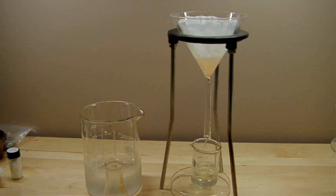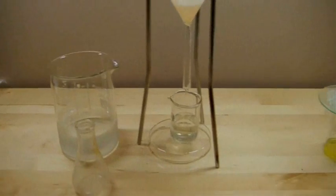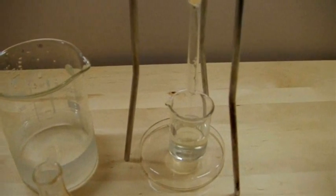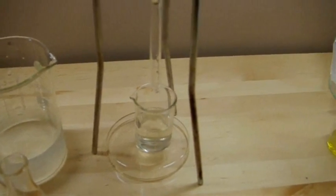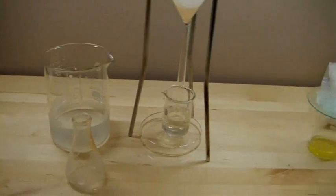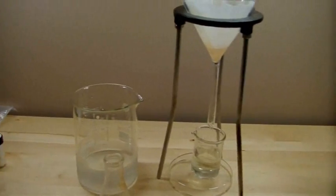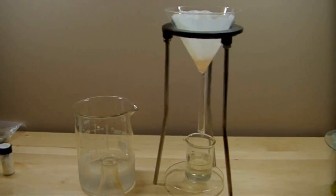And you can see as I thought, that's removed most of the color from the solution. So now we should have a fairly pure solution of potassium iodide with the potassium iodate precipitate trapped in the filter paper.